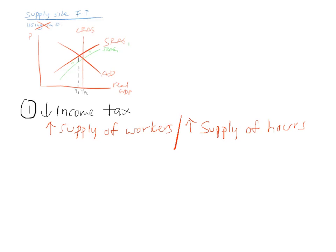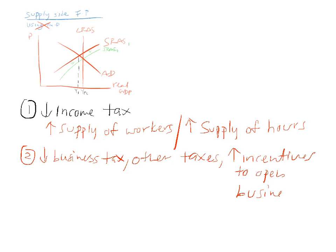The second thing they say is for businesses, what we can do is reduce business tax, and not just the normal business tax, other taxes like payroll tax, and you can increase the incentives to open businesses. That then will also make it more likely that businesses will provide goods and services and increase the short-run aggregate supply.